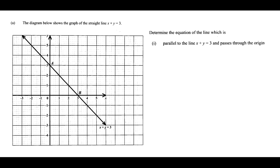The diagram below shows the graph of a straight line x plus y is equal to 3. They have drawn a line for us, and they said determine the equation of the line which is parallel to this line, x plus y equals 3, but it passes through the origin. The origin is the point (0, 0) — those are the coordinates of the origin.